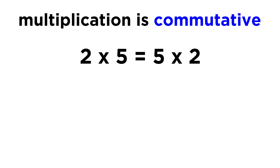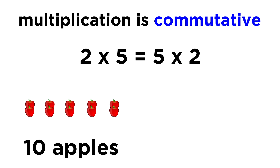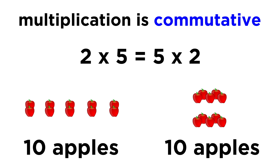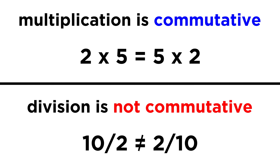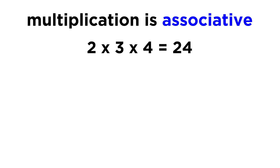We should note that multiplication, like addition, is commutative. Two times five is the same as five times two, because whether we have five piles of two apples or two piles of five apples, we have ten apples in total. Division, however, like subtraction, is not commutative — ten divided by two is not the same as two divided by ten. Also, multiplication is associative: two times three times four will be twenty-four no matter which numbers are multiplied first.